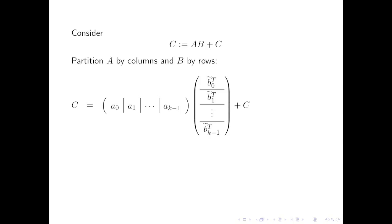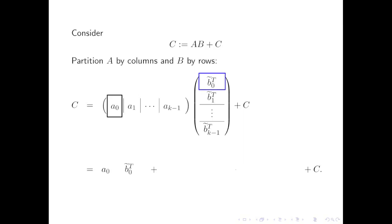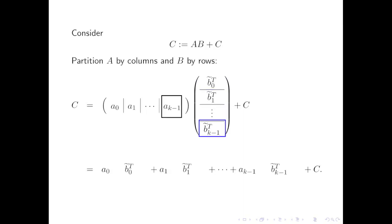Let's think of this in terms of partitioning matrices. If we partition matrix A by columns and matrix B by rows, then multiplying the partitioned A times partitioned B is very much like doing a dot product except with symbols — something we've seen over and over again. Writing that out, the dot product with symbols gives the first term, then the second term, and so on through the final term.